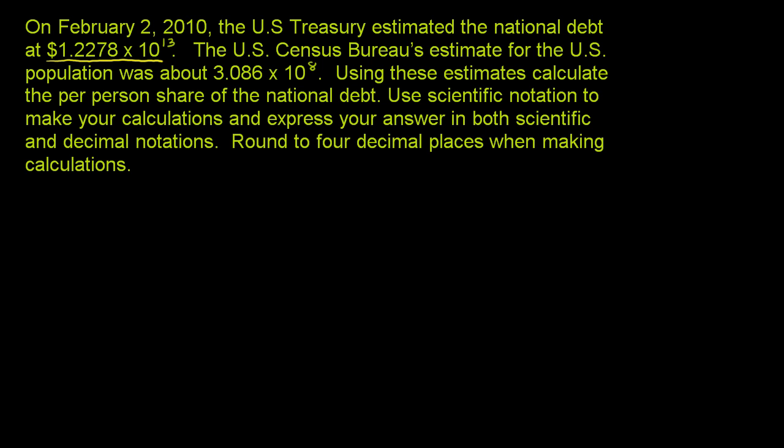Then they tell us that the US Census Bureau's estimate for the US population was about 3.086 times 10 to the 8th power. So this is a little over 300 million people. So that's an interesting number right there. It's a population. And then they say, using these estimates, calculate the per person share of the national debt.